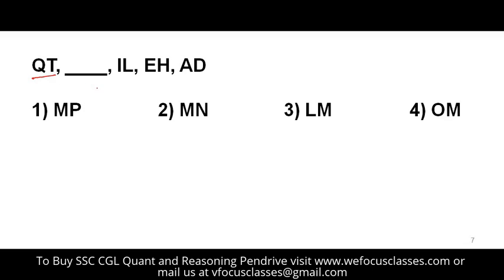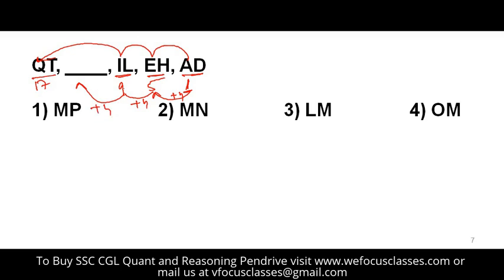The next problem: QT, blank, IL, EH, AD. Look at the first letters — A is 1, E is 5, I is 9, Q is 17. The difference is 4 each time, so the next is 9 plus 4 = 13, which is M. For the second letters — D is 4, H is 8, L is 12 — difference of 4, so next is 16, which is P. The answer is MP.